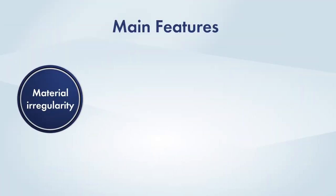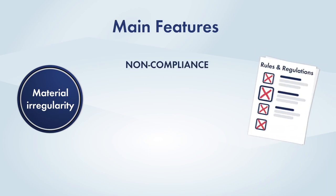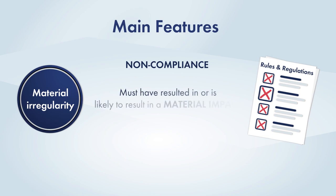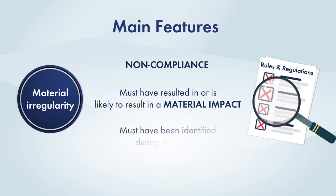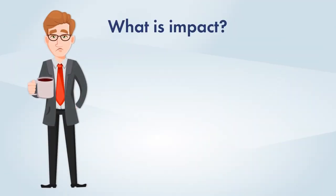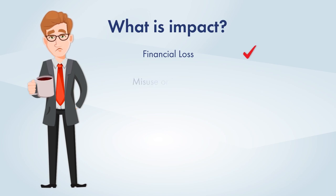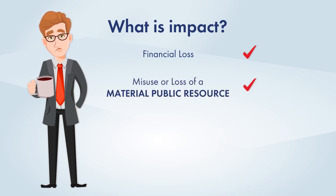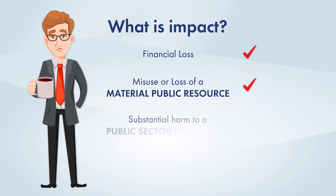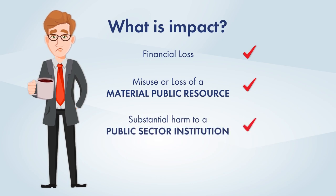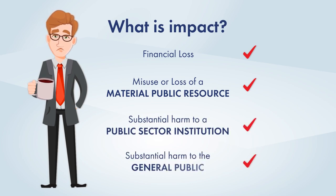Let's expand on the main features of material irregularity. For any non-compliance to be considered a material irregularity, it must have resulted in, or is likely to result in, a material impact. This must have been identified during an audit. Impact refers to a financial loss, the misuse or loss of a material public resource, or substantial harm to a public sector institution or the general public.